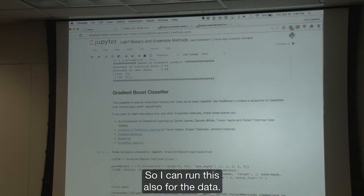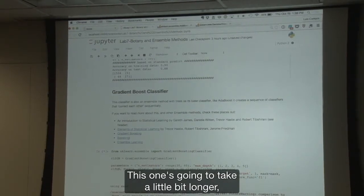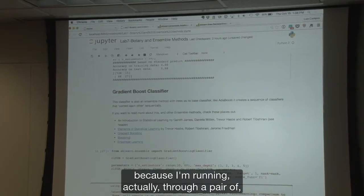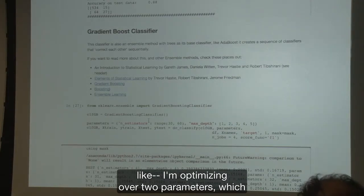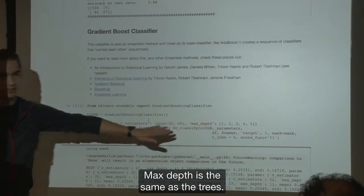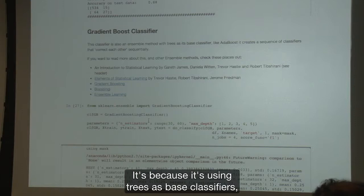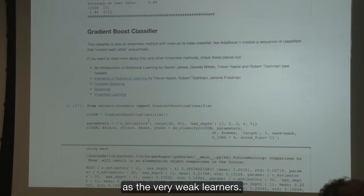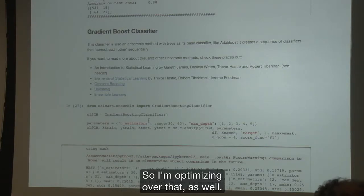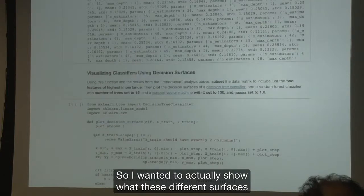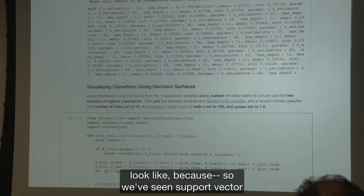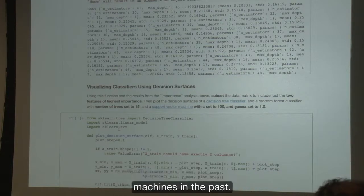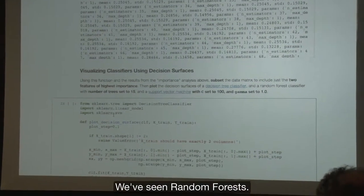So I can run this also for the data. This one's going to take a little bit longer. It's because I'm optimizing over two parameters, which is the number of estimators and then the max depth. Max depth is the same as the trees. It's because it's using trees as base classifiers, as the very weak learners. I wanted to show what these different surfaces look like. We've seen support vector machines in the past, and we now have seen decision trees, random forests, and a few of the boosting ensemble learners.